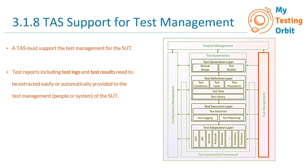This is the end of the generic test automation architecture. As we have discussed earlier, it is not necessary that all the layers we have learned about need to be present in every test automation solution. These layers can be present or absent depending on what you are automating and what you need from each layer. It is important to keep in mind that a test automation architecture does not always have to include all these layers.